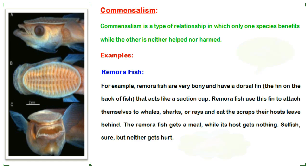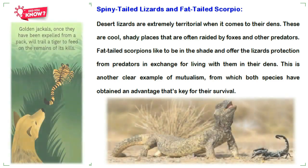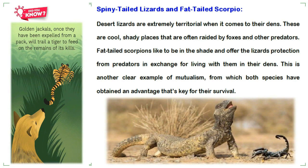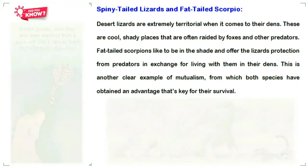Desert lizards are extremely territorial when it comes to their dens — cool, shady places that are often raided by foxes and other predators. Fat-tailed scorpions like to be in the shade and offer the lizards protection from predators, in exchange for living with them in their dens. This is a clear example from which both species have obtained an advantage that is key for their survival.